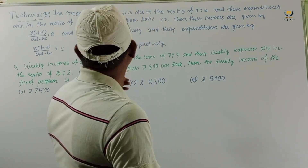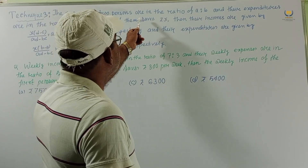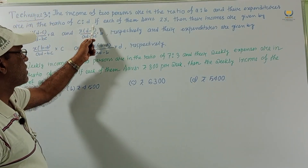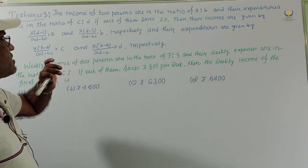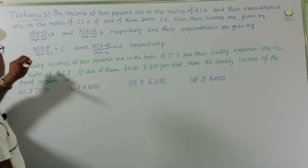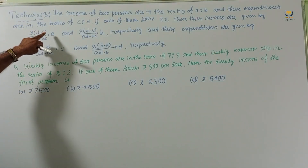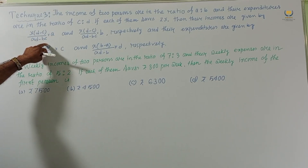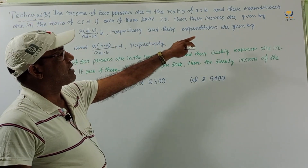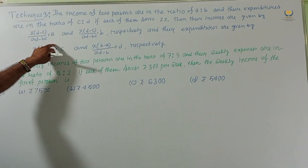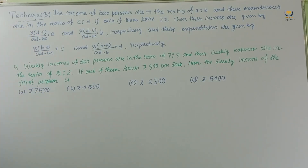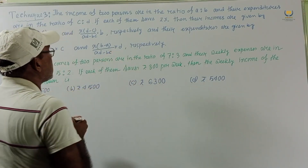Taking number three: given the income of two persons are in the ratio a:b and their expenditures are in the ratio c:d. If each of them saves rupees x, then their incomes are x(d−c)·a / (ad−bc) and x(d−c)·b / (ad−bc) respectively, and their expenditures are x(b−a)·c / (ad−bc) and x(b−a)·d / (ad−bc) respectively.